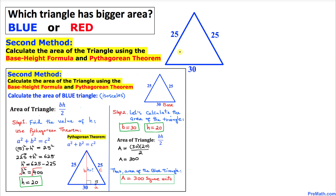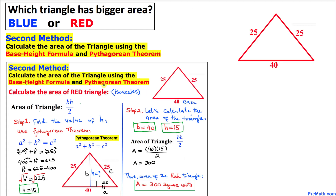Here's the second method for the blue triangle. In the first step, we found the value of the height h by using the Pythagorean theorem. Then in the second step, we applied the formula: area equals base times height divided by 2. The area of the blue triangle turns out to be 300 square units. Similarly, for the red triangle, by finding h first and then applying the area formula, we get the area of the red triangle, which also turns out to be 300 square units.